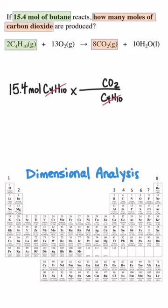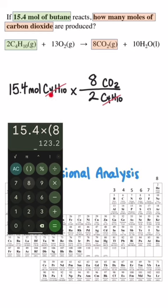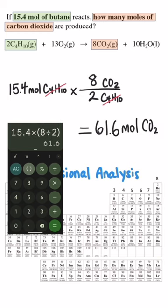The coefficients are used in the conversion factor to compare the amount of CO2 and butane from the balanced chemical equation. So 15.4 moles of butane times 8 over 2 equals 61.6 moles of CO2.